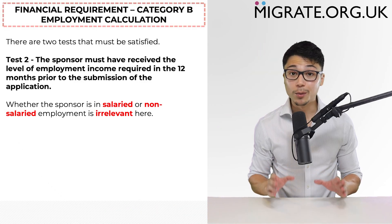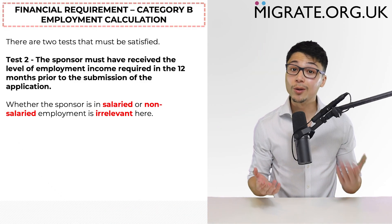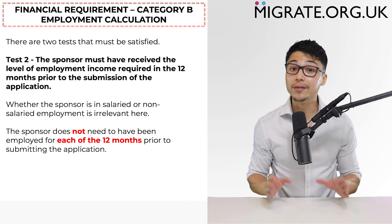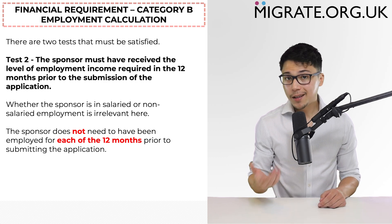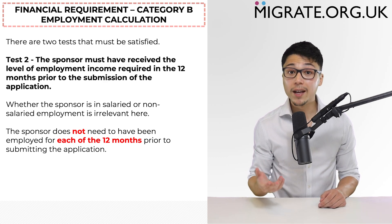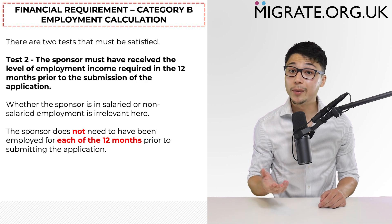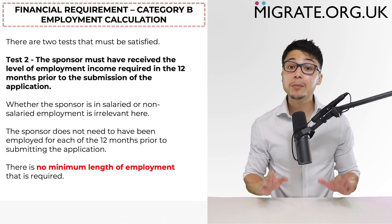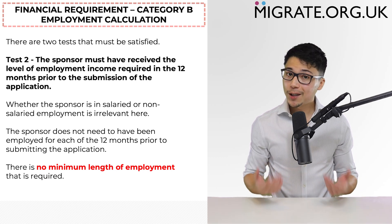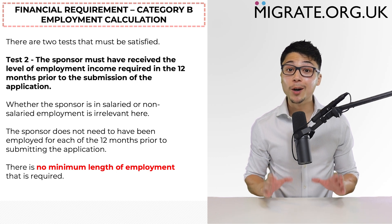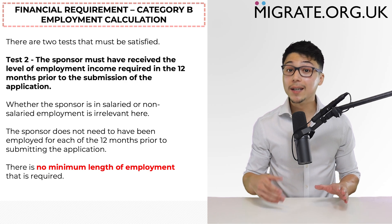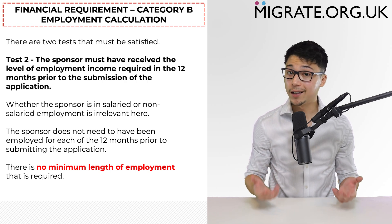There are a few other things to note about part 2 of the two-part test. Firstly, whether the sponsor is in salaried or non-salaried employment is irrelevant here. Secondly, the sponsor does not need to have been employed for each of the 12 months prior to submitting the application — there is nothing necessarily wrong with gaps in employment. Finally, with regards to category B, there is no minimum length of employment that is required. So technically a sponsor can meet the financial requirement by relying on only one week's or one month's pay slips if they are a particularly high earner.